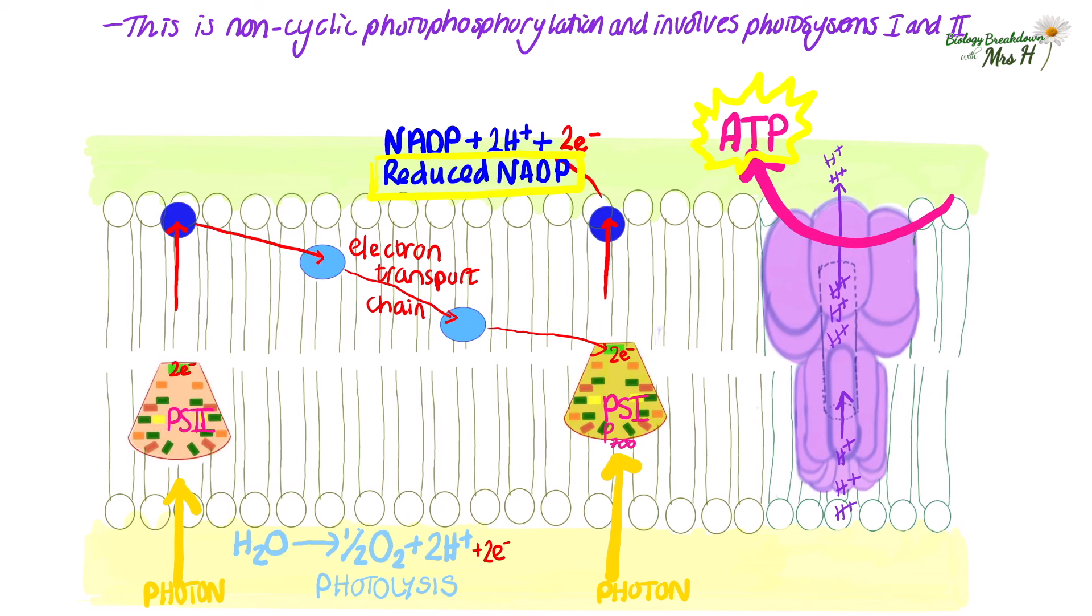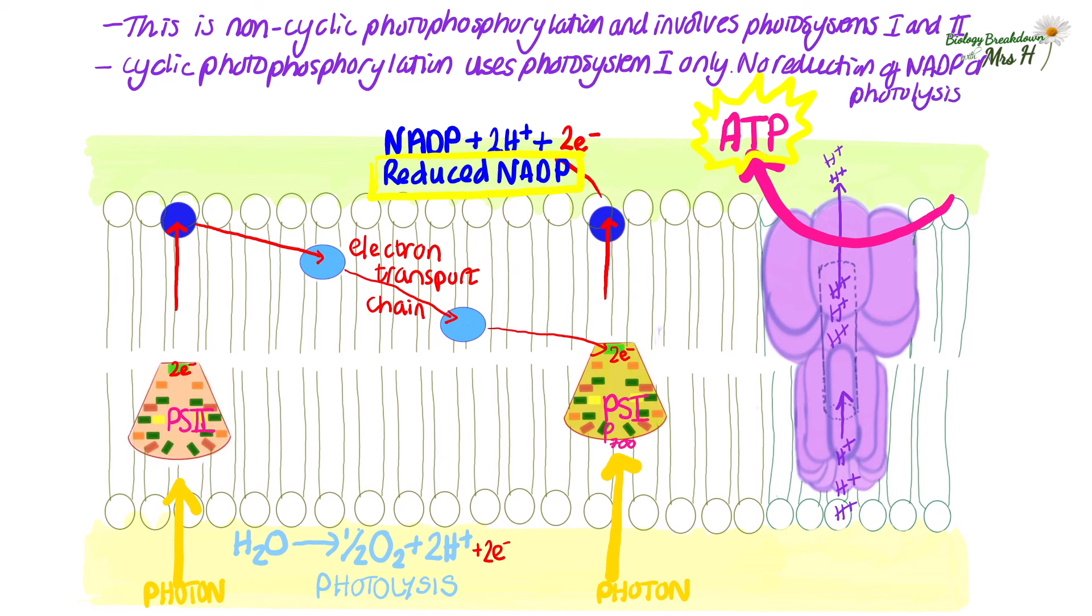One more small thing to mention before the end of this stage is that ATP can also be made by cyclic photophosphorylation. And this uses photosystem 1 only. There's no reduction of NADP and there's no photolysis of water in the cyclic photophosphorylation.